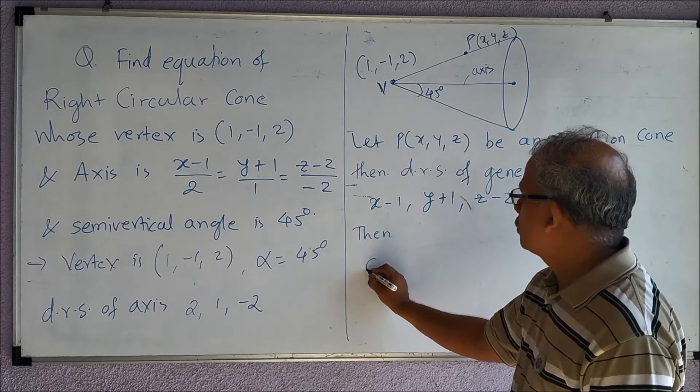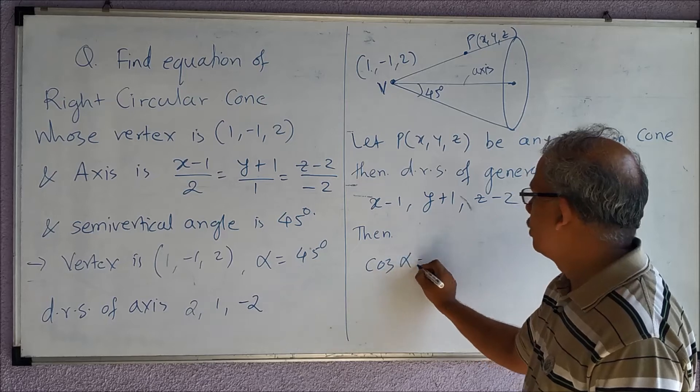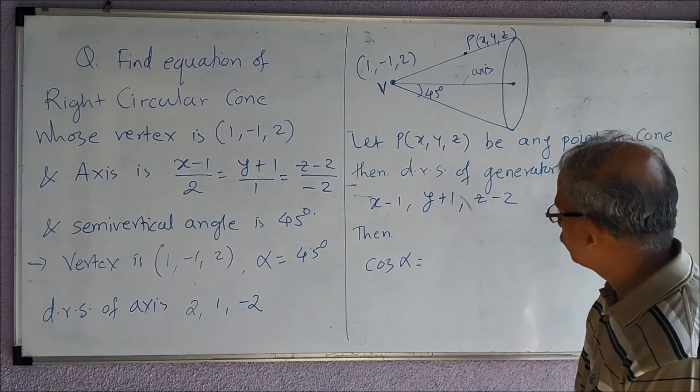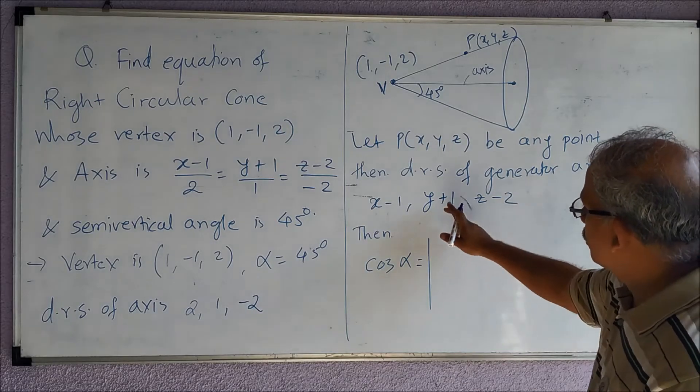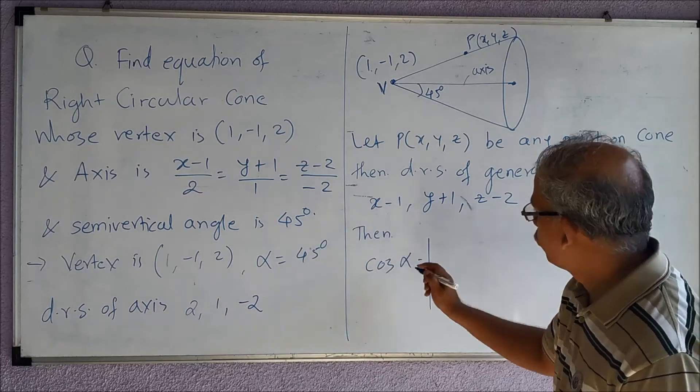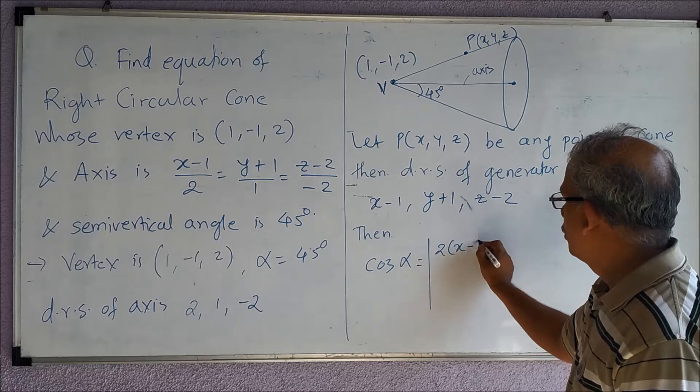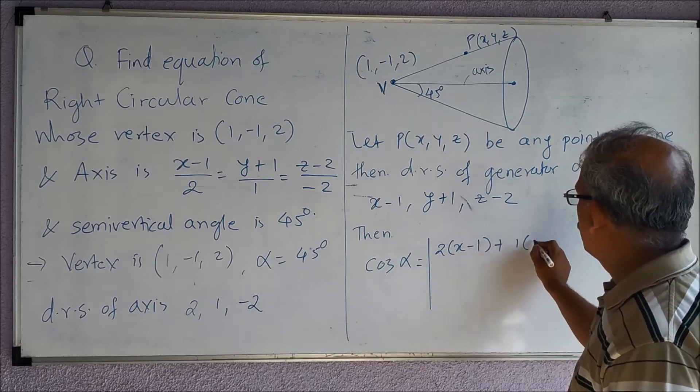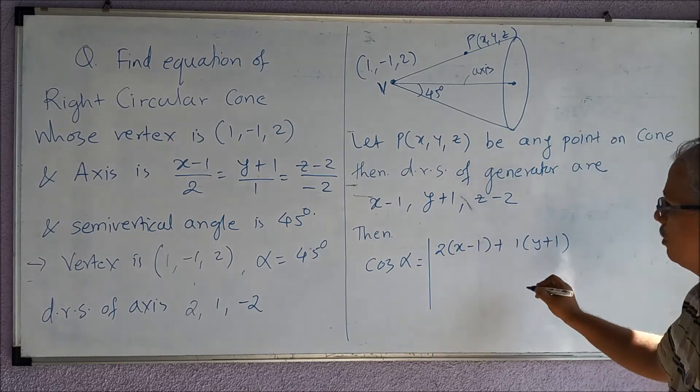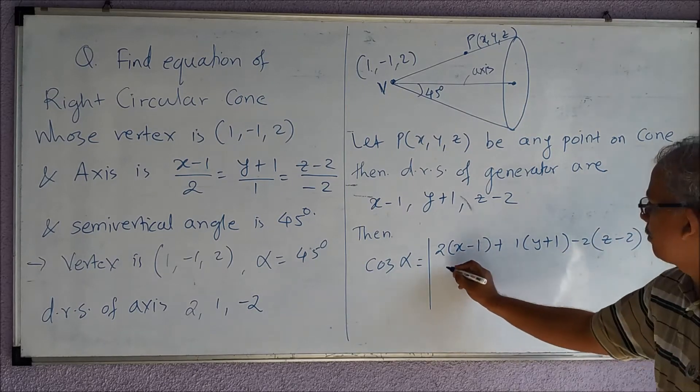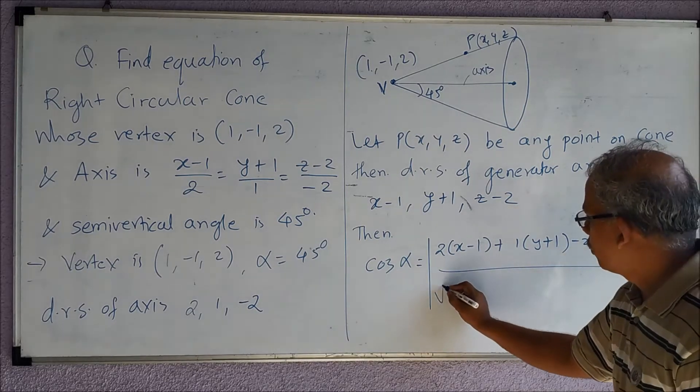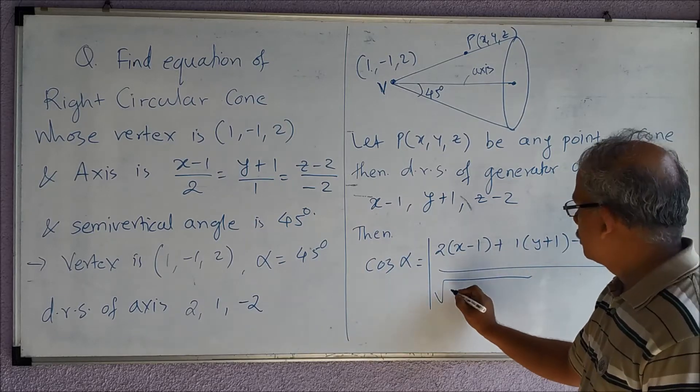So we say that then cos(α) is equal to, we'll write down the equation now. It is the product: (x-1)·2 + (y+1)·1 + (z-2)·(-2) divided by √(2² + 1² + (-2)²)...